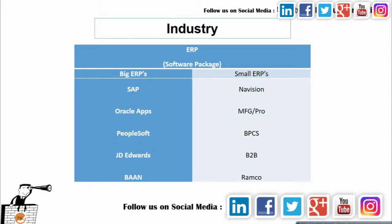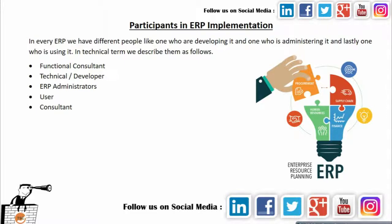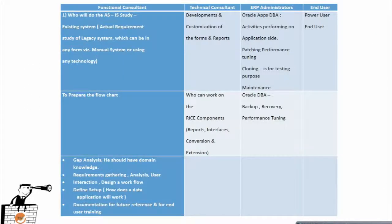Now let's understand the ERP industry and the packages. ERP is divided into big ERPs and small ERPs. The big players are SAP, Oracle, PeopleSoft, JD Edwards, and Baan. Small ERPs include Navision, MFG Pro, BPCS, B2B, and Ramco. In every ERP implementation, there are different participants: those who develop it, those who administer it, and those who use it. In technical terms, these are described as functional consultants, technical-level developers or ERP administrators, and ERP users and consultants.